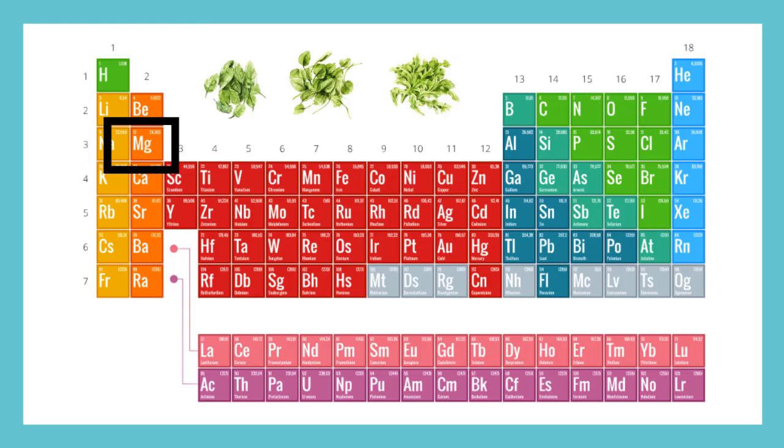Number twelve is magnesium, with a symbol Mg. Magnesium is used in plants and makes up chlorophyll. That's what makes plants green. The leafy green plants you eat have lots of magnesium.